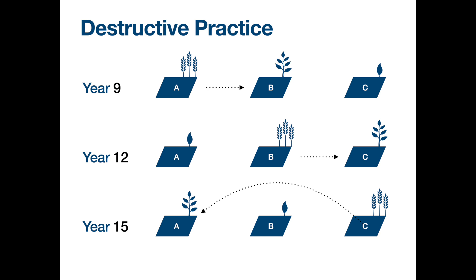When the population gets bigger, eventually the rainforest cannot regenerate itself because the cycle is shortened. So it becomes very destructive to the rainforest.